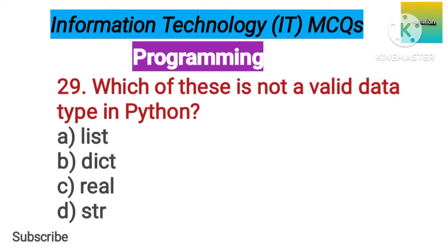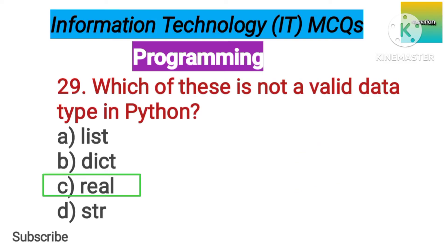Number 29. Which of these is not a valid data type in Python? Option A: List. B: Dict. C: Real. D: Str. The correct answer is option C, Real.